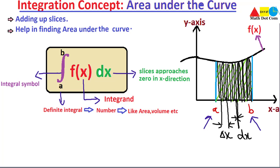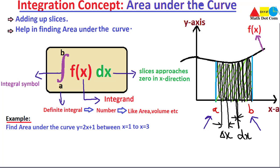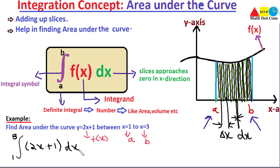Let's have an example of finding the area under the curve. We are given y = 2x + 1 between x = 1 and x = 3. These are the limits — a = 1 and b = 3 — and f(x) = 2x + 1. We set up the integral from 1 to 3 of (2x + 1) dx. When we integrate this, we will get the area under the curve of the given function between a and b.